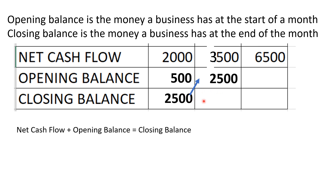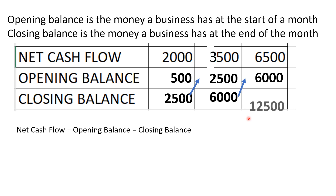We work out November's closing balance: opening balance £2,500 plus net cash flow £3,500 gives £6,000. That closing balance becomes December's opening balance. Adding December's net cash flow: £6,000 plus £6,500 gives a final closing balance of £12,500. That is an introduction to cash flow and if you can do all that you've pretty much broken the back of it. Well done.